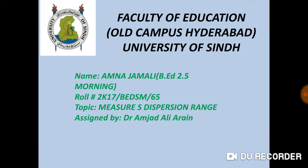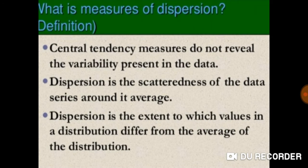What is measures of dispersion? Definition: central tendency measures do not reveal the variability present in the data. Dispersion is the scatteredness of the data series around its average. Dispersion is the extent to which values in a distribution differ from the average of the distribution.